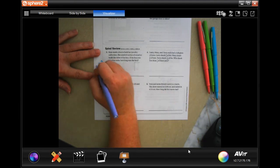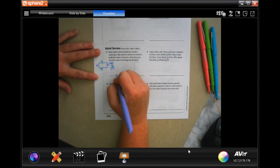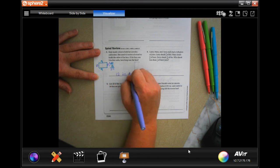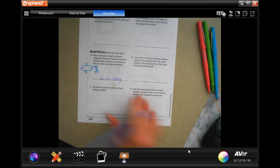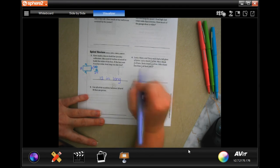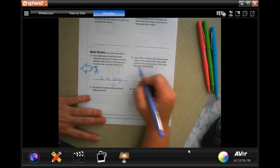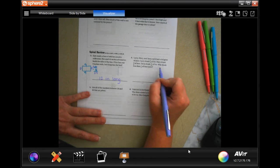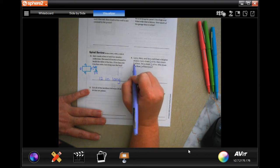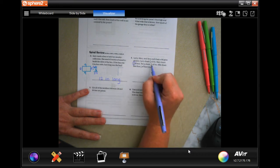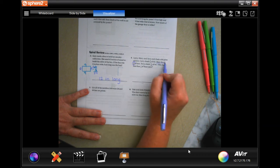So, 24 divided by 2 is 12. So, 12 inches long. Larry, Mary, and Terry each had a full glass of juice. Larry drank 3 quarters of his. Mary drank 3 eighths of hers. Terry drank 7 tenths of his. Who drank less than one half of their juice? Well, half of 4 is going to be 2. 3 is more than 2. Half of 8 is 4. 3 is less than that. Half of 10 is 5. 7 is more than that. So, it looks like Mary.